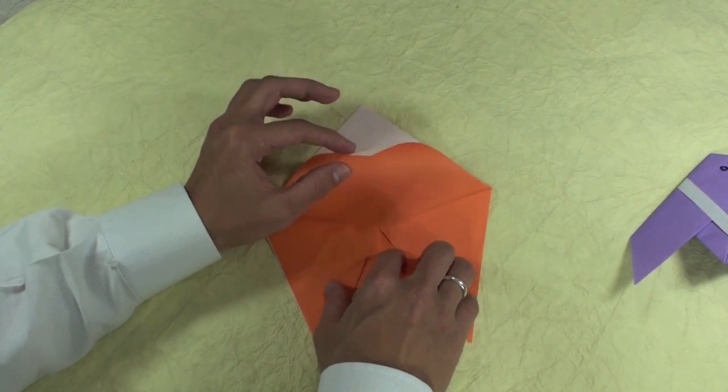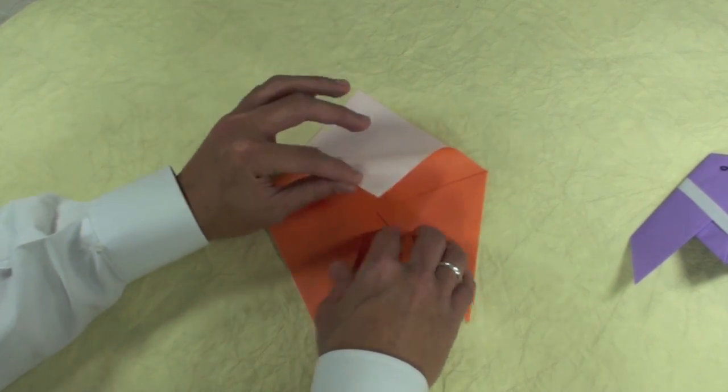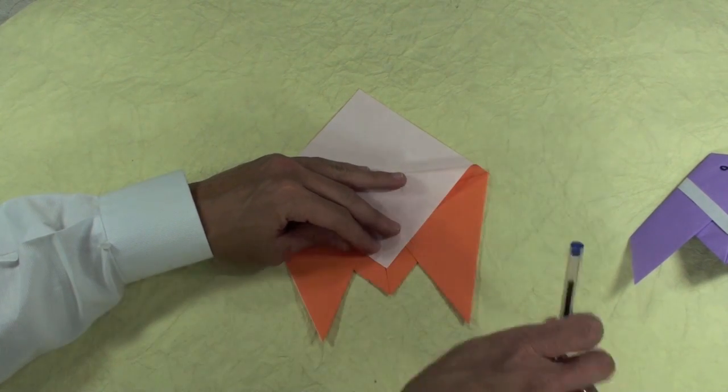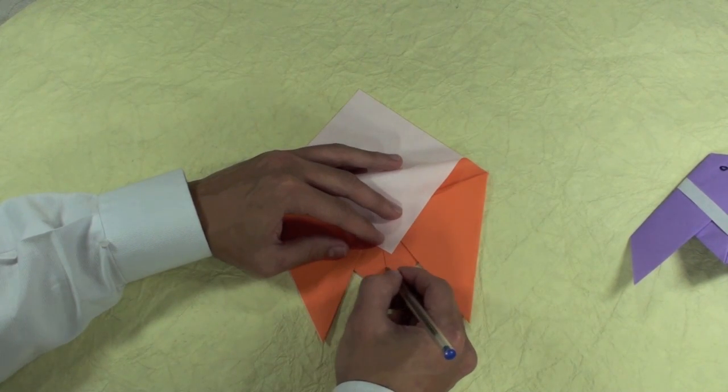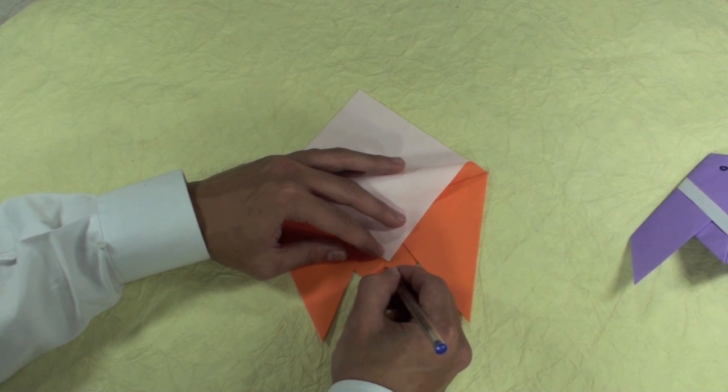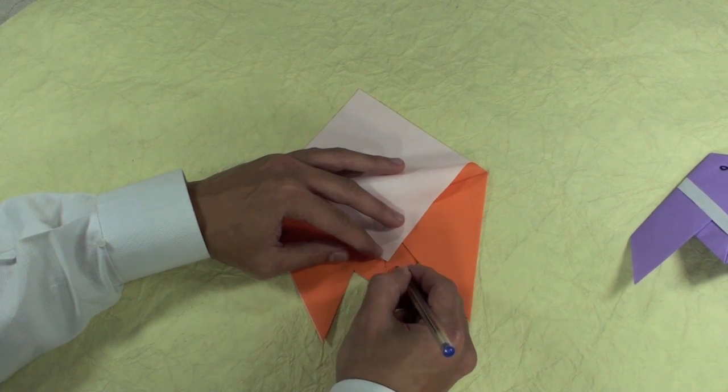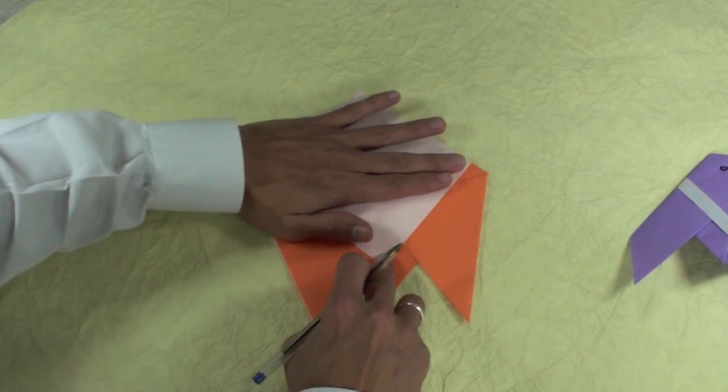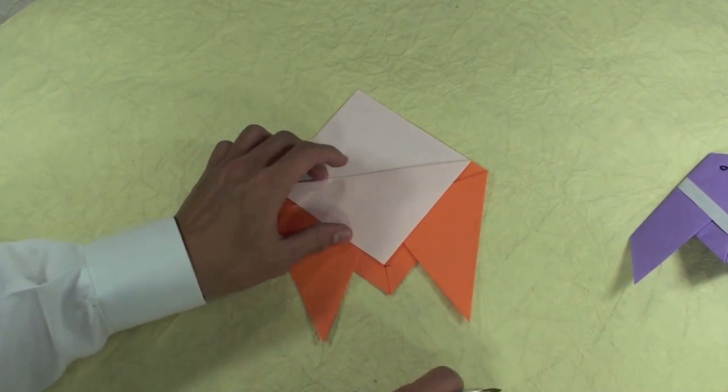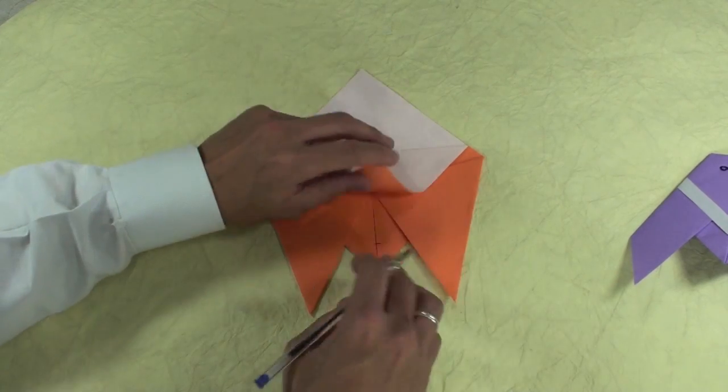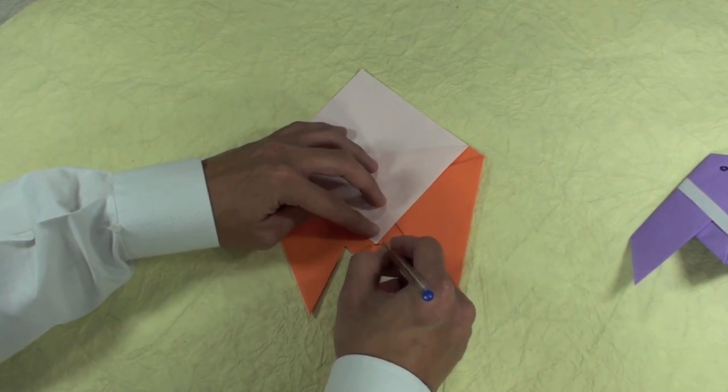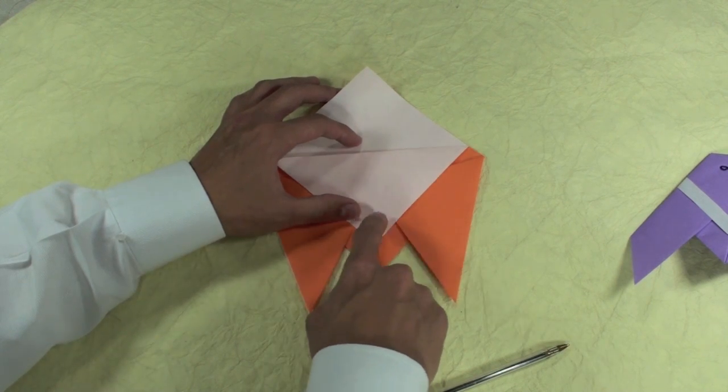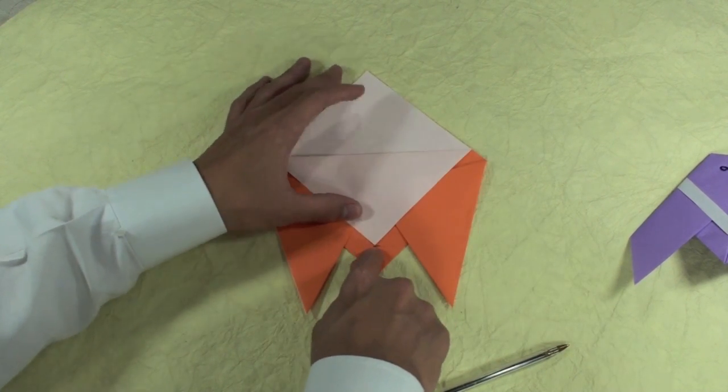Now, fold here. One layer. Take one layer and fold about this line here. Okay. Making this point go up to this line here. It doesn't need to be precise. Just by looking, try to fold until this point here.